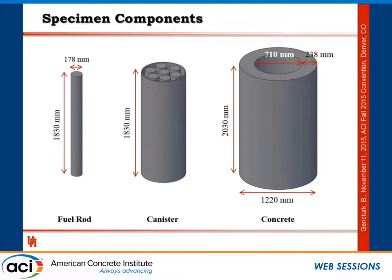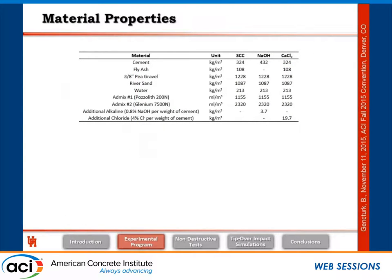This is the assembled cask with dimensions for the different parts. The fuel rods are about 7 feet tall and 7 inches in diameter. The concrete wall thickness is about 9.5 inches, the height is approximately 8 feet, and the outside diameter is 48 inches with an inside diameter of about 36 inches. We used typical self-consolidating concrete (SCC) with fly ash, which is very typical for these structures. The specified compressive strength was 5 KSI (about 35 MPa).